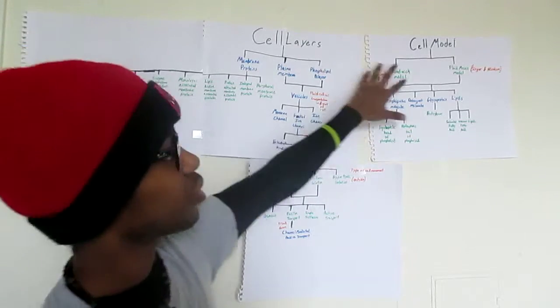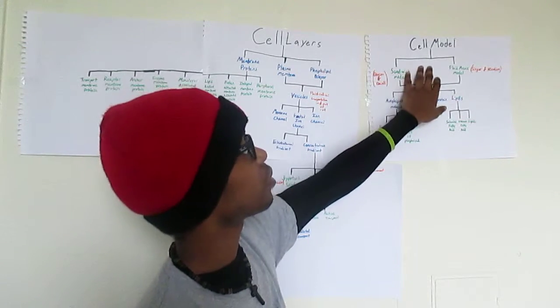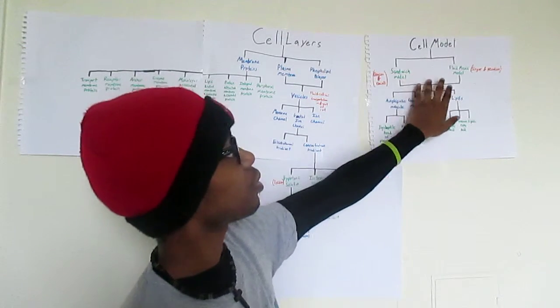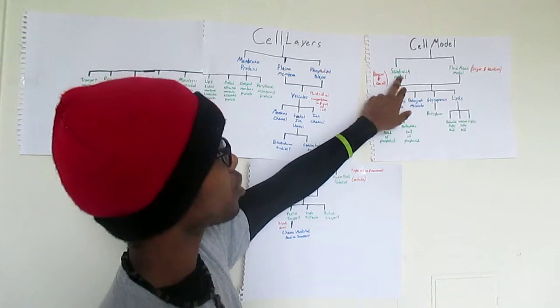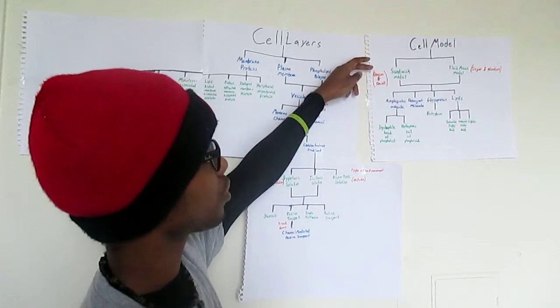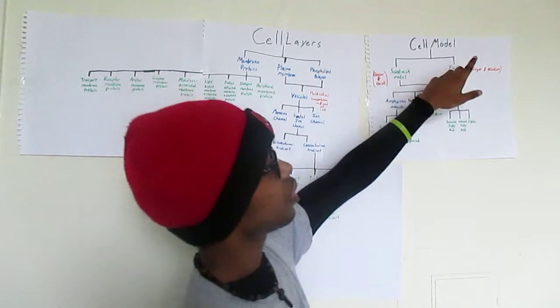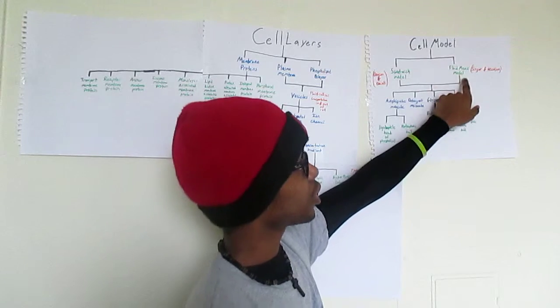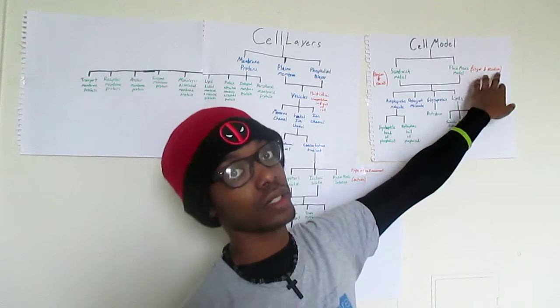The first thing we want to talk about is the cell model. Within the cell model we have the sandwich model, which is from Davidson and Danelli, and the fluid mosaic model, which is from Singer and Nicholson.